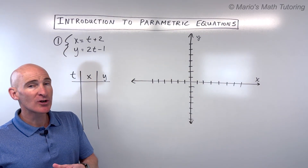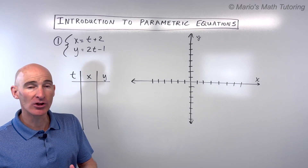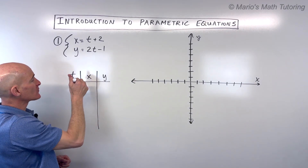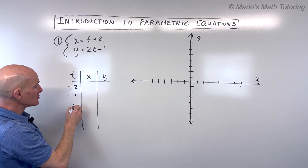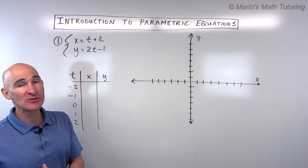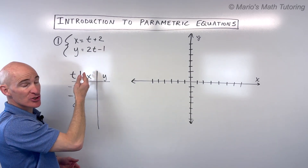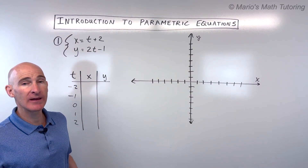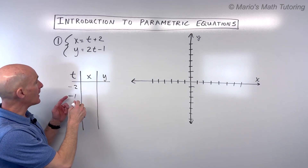What we're going to do now is make a table and look at what this graph actually looks like. We're going to pick some values for t — a couple negative values, zero, and a couple positive values. Sometimes you have to be careful to watch out for any restrictions on that parameter. You might not be able to put negative numbers in there, so be careful for that.